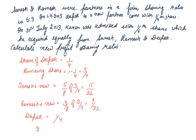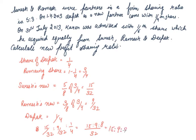So 15/32 : 9/32 : 1/4. Taking LCM as 32, this gives 15 : 9 : 8. The new profit sharing ratio among Suresh, Ramesh, and Deepak is 15 : 9 : 8. After that, Karan got admitted and he took a 1/6 share acquired equally from Suresh, Ramesh, and Deepak.